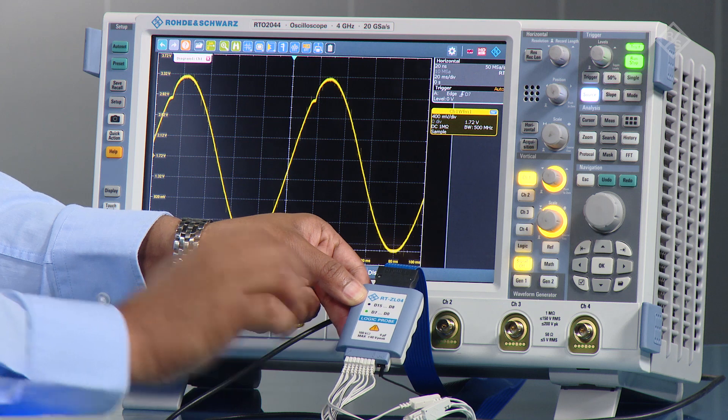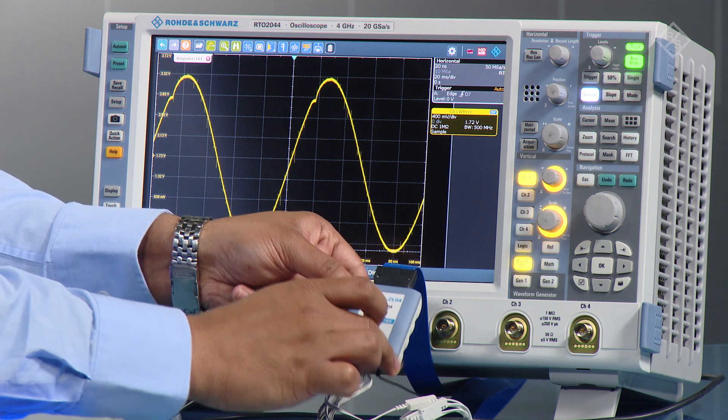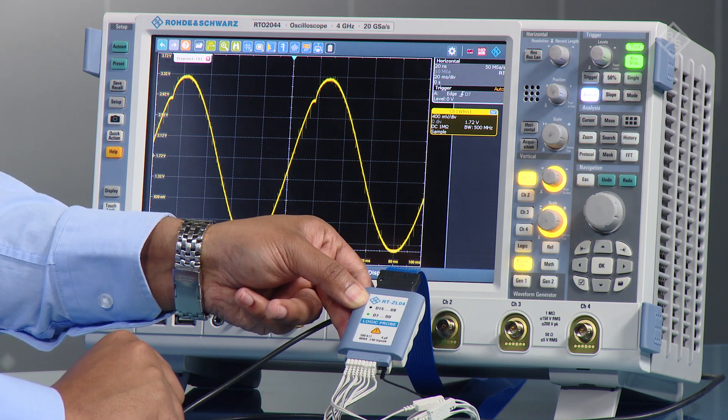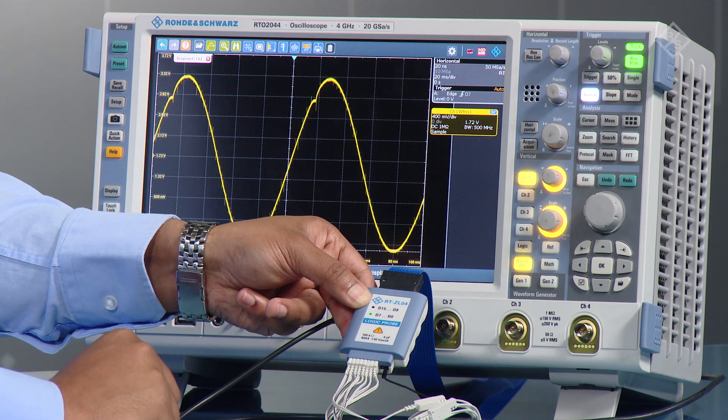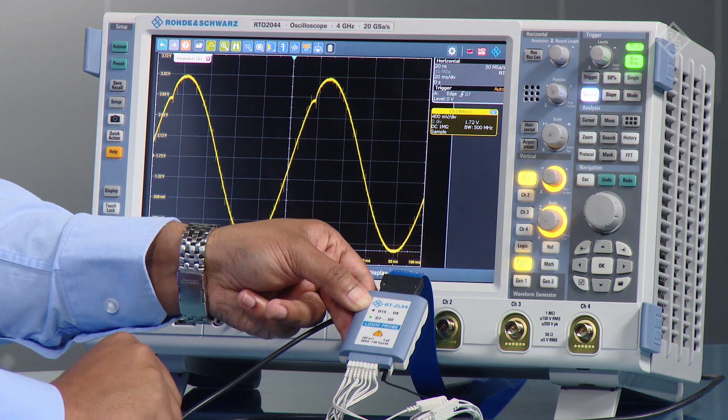And you can actually use this in one pod, where you have eight channels, and you can go from D0 to D7, or another pod simultaneously for D8 to D15 as well.